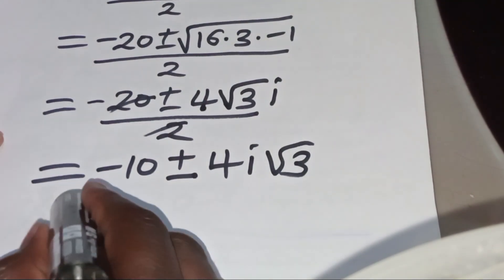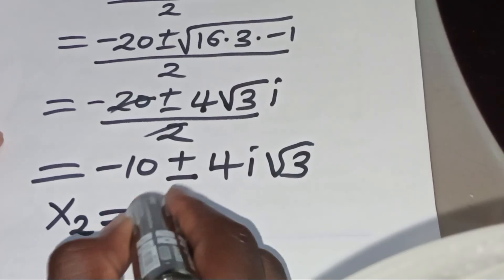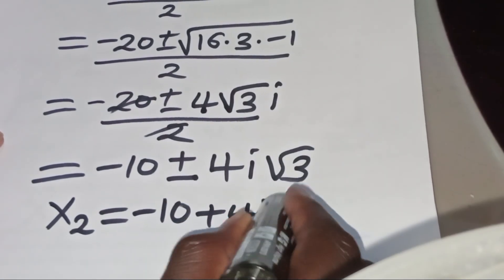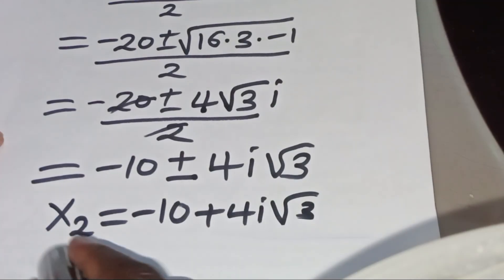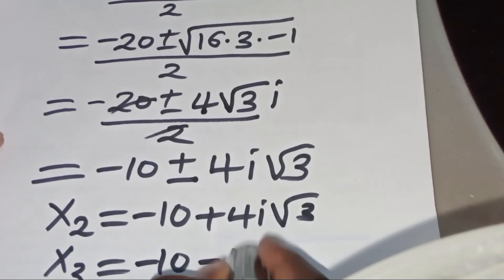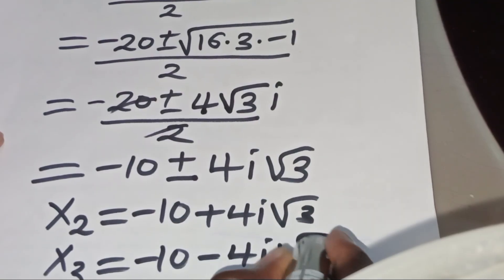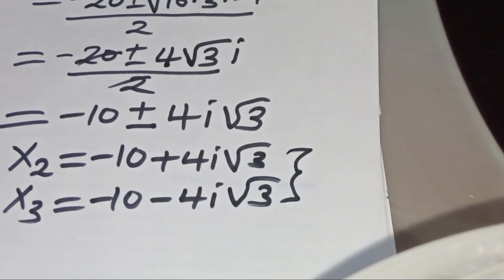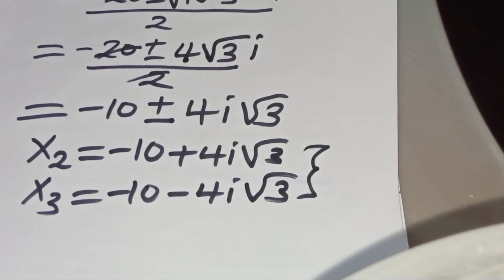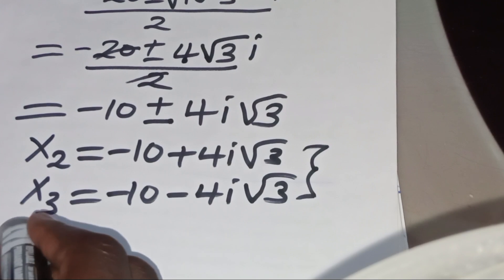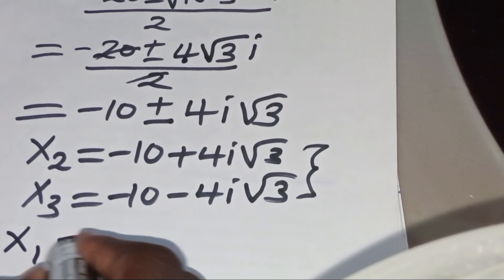So x₂ = −10 + 4i√3 and x₃ = −10 − 4i√3. These are the two complex roots. The algebra problem has one real solution and two complex solutions.